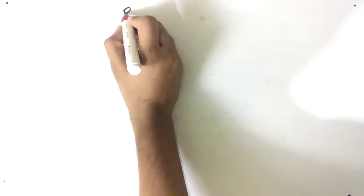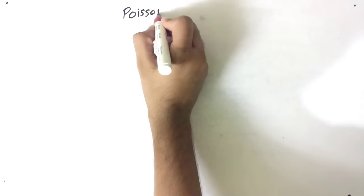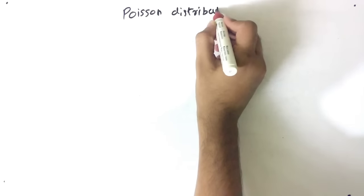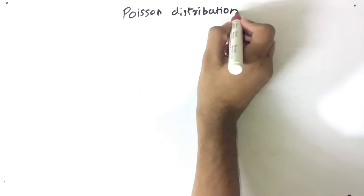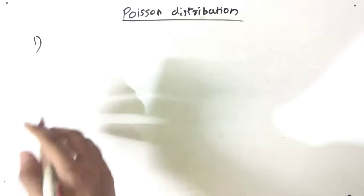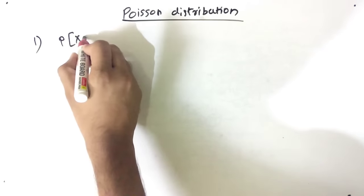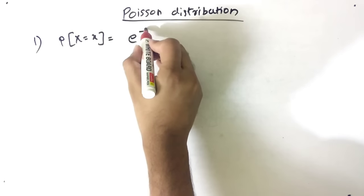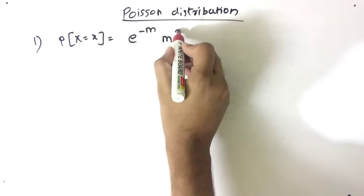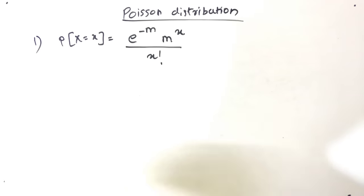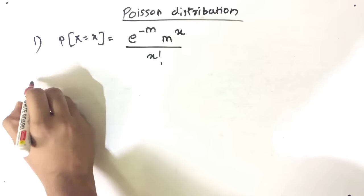Hello friends, today our topic is Poisson distribution. The formula is P(x) = e raised to minus m, times m raised to x, upon x factorial. Now let's see the meaning of the terms.